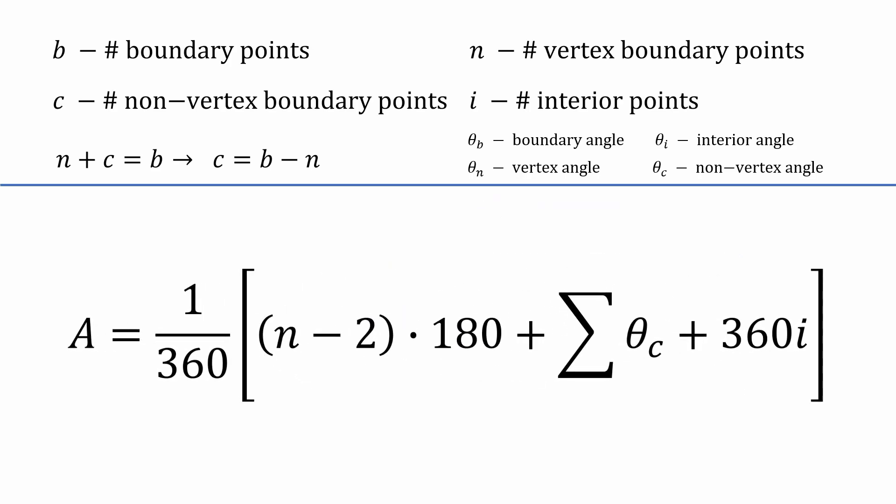Now there's only one sum remaining, the sum of all the non-vertex boundary angles. Since we know c is b minus n from above and that each non-vertex angle is 180 degrees, we can replace that sum with b minus n times 180.